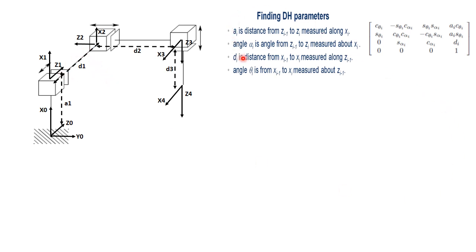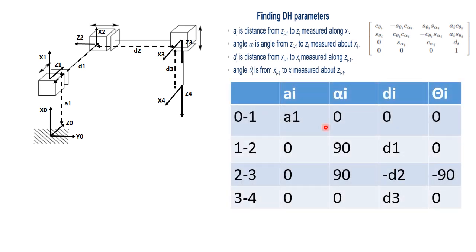So this is our table to find the DH parameters and this is the transformation matrix for different joints. So basically, when you want to solve the DH table, this is the DH table.